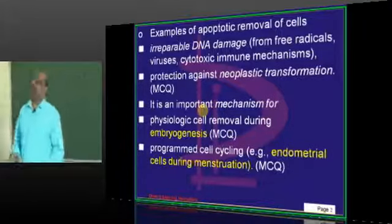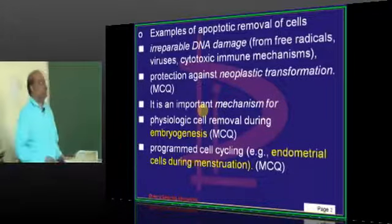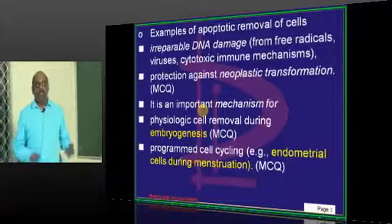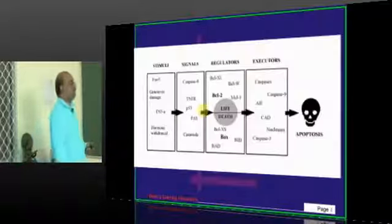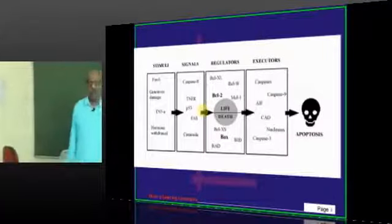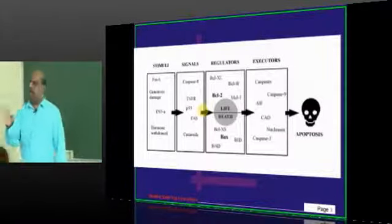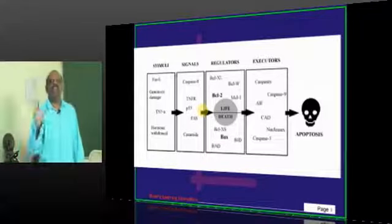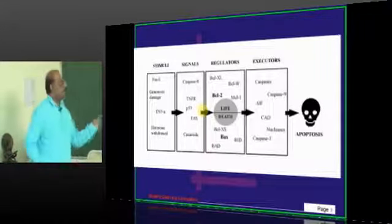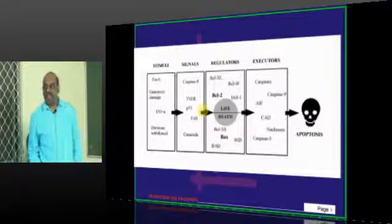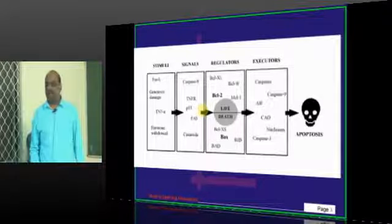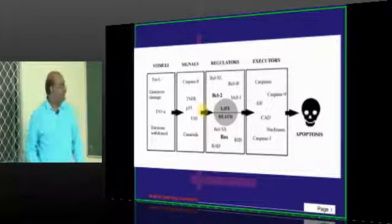Physiological removal during embryogenesis is apoptosis. Endometrial shedding during menstruation is also an example of apoptosis. In apoptosis there are four things — just like a judicial system: there is a stimulus to do crime, there is a signal, there is a police catching the crime, and the judge says since you have done the crime, you need to be executed.